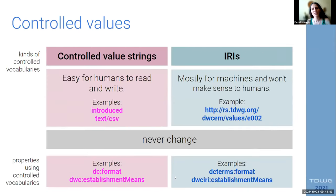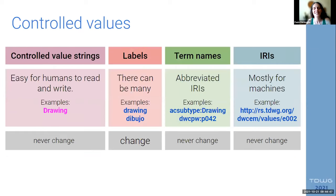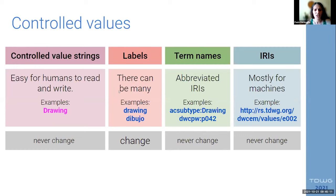Let me expand on labels and term names. Term names are abbreviated IRIs — some are easier to read and some are impossible for humans. They never change because they're just abbreviated IRIs. Labels are what humans mostly understand. Labels will usually be derived from controlled value strings, but there can be labels in as many languages as we want, and those labels can change. We'll be working with that today.